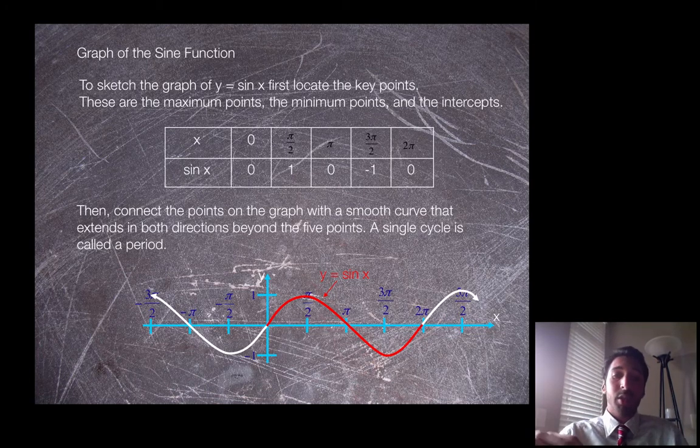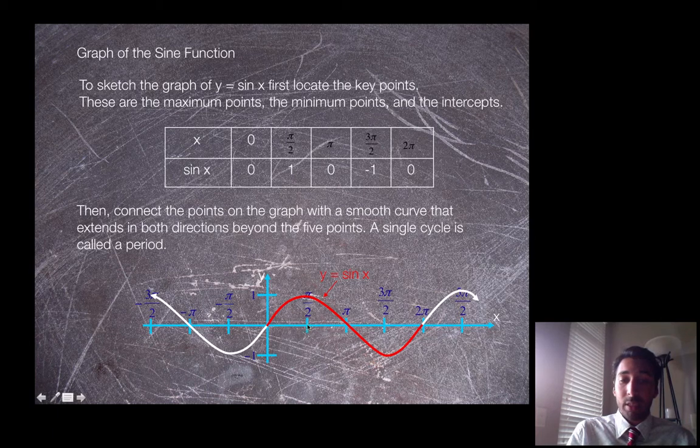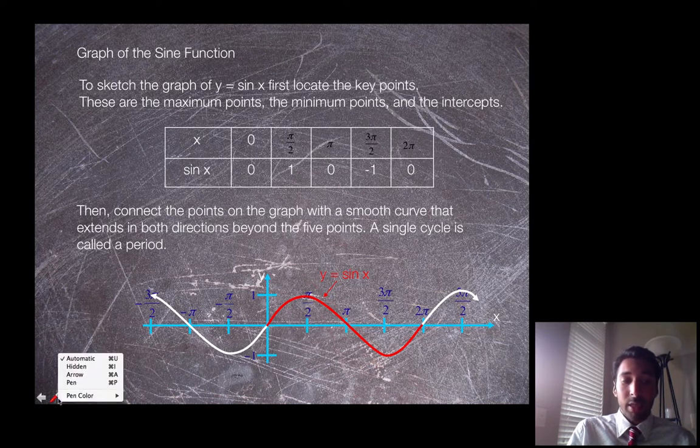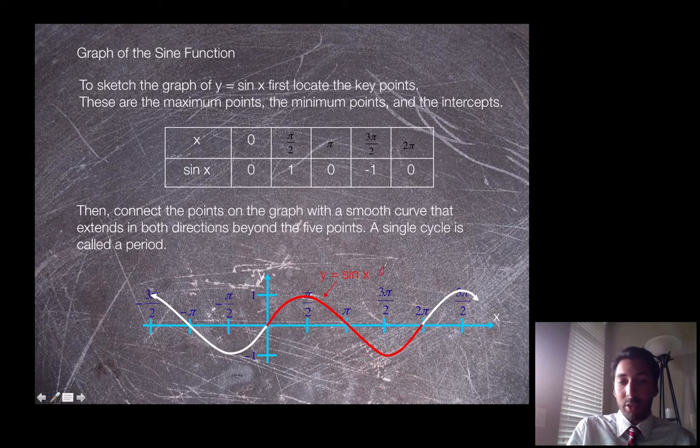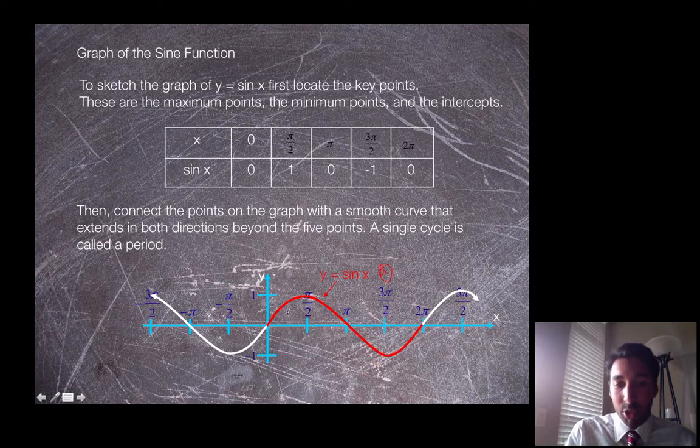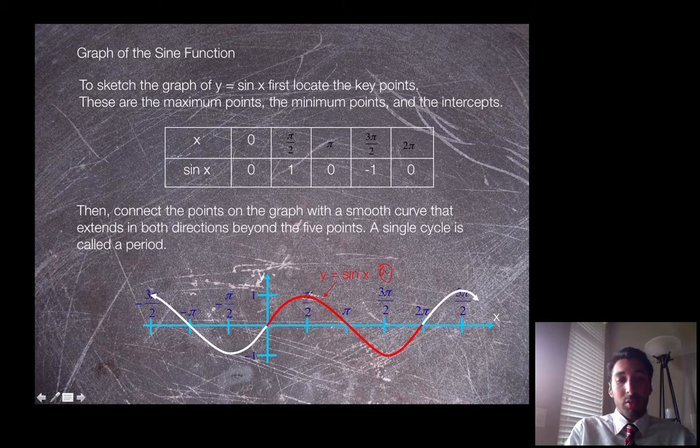Another thing to look at is the height of the function. The height goes from 0 and goes up to 1. What we call the height of the function is the amplitude. The amplitude of the function is 1, meaning it goes up 1. These are some basic characteristics of a sine function.